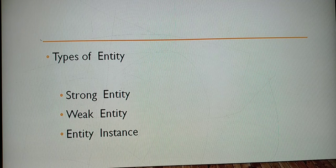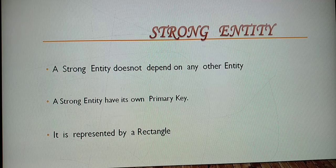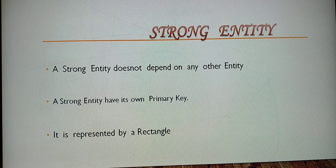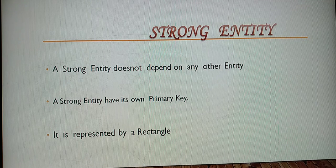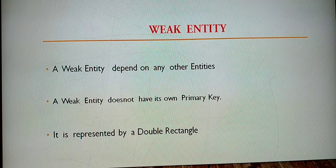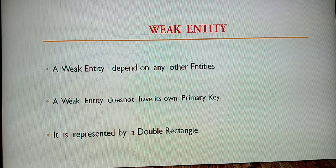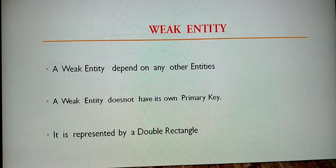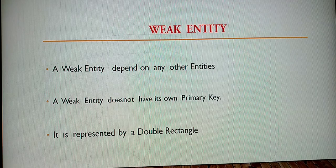There are three types of entity: strong entity, weak entity, and entity instance. A strong entity does not depend on any other entity. It has its own primary key and is represented by a rectangle. A weak entity depends on another entity and does not have its own primary key. It is represented by a double rectangle.